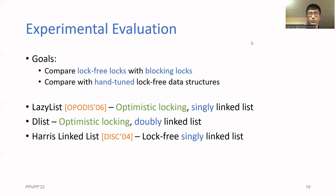There are three types of linked lists we ran. The lazy list essentially uses optimistic locking to implement a singly linked list. We also have D-list, which is the doubly linked list example from before. And finally, we compare with Harris's lock-free singly linked list. For lazy list and D-list, we have both a lock-free and a blocking version, which are represented with the LF and BL suffixes respectively.